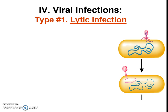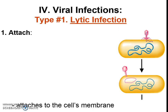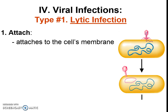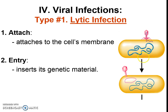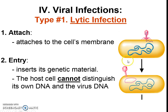The first type is the lytic infection. This is in a bit more detail than we need for honors biology, but first the virus attaches — that's done with proteins that attach to the host cell membrane. This virus kind of looks spidery. It'll enter by squeezing in and shooting its genetic material into the host cell.